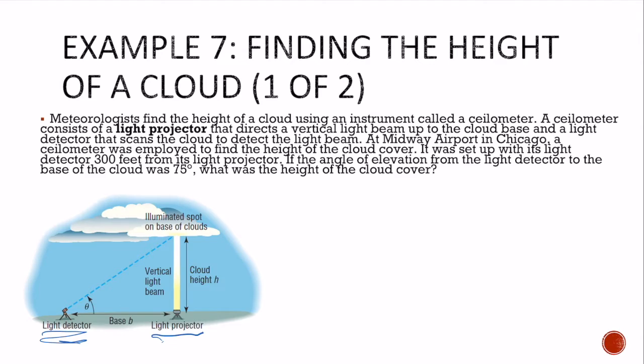Sorry, there's not good spacing on these words. It was set up with a light detector 300 feet from its projector, okay. If the angle of elevation was 75 degrees, what's the height of the cloud cover? Again, we're going to use tan, right. I know my adjacent, I don't know my opposite.